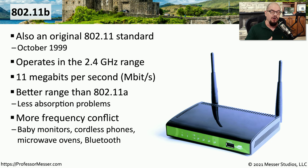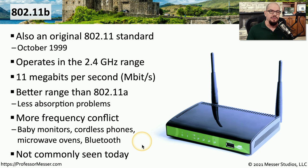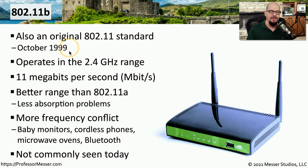Unfortunately, there are more devices using the 2.4 gigahertz range frequencies — things like baby monitors, cordless phones, microwave ovens, and Bluetooth all use frequencies within the 2.4 gigahertz range. The 802.11a and 802.11b standards are relatively old, being released in October of 1999, so you don't commonly see those two standards operating today.